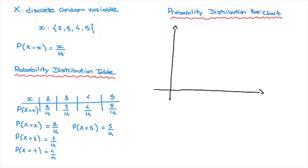The horizontal axis shows all possible values the discrete random variable can take, labeled lowercase x, with values 2, 3, 4, and 5. The vertical axis shows P(X = x), the probability that the discrete random variable equals each of those values. We add the values 2, 3, 4, and 5 to the horizontal axis.